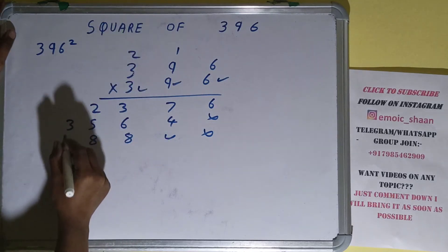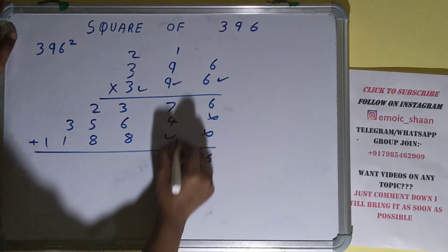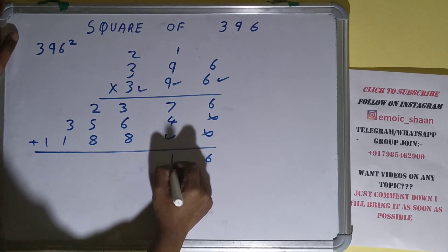2 carry. 3 × 3 = 9 plus 2 is 11. Add everything: 6, 7 plus 4 is 11, 1 carry.